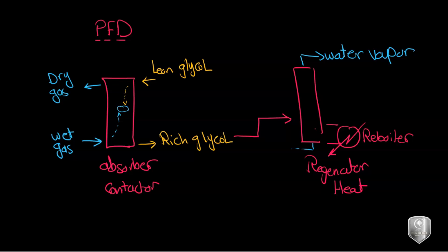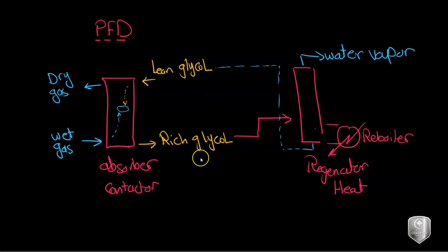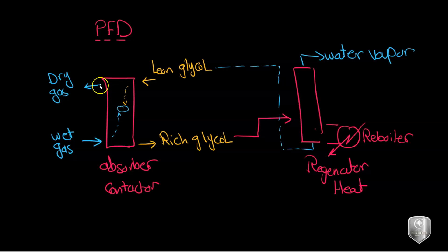The glycol is then fed again to the absorber. So this is the general idea of the BFD of dehydration: in the absorber we remove the water vapor using lean glycol and it exits as rich glycol. In the regenerator — the reverse process — we apply heat, stripping the water vapor from the rich glycol and producing lean glycol again.